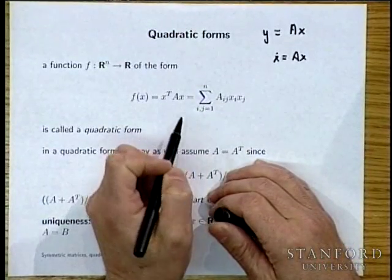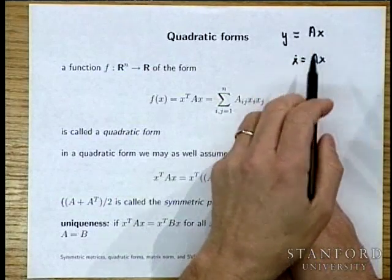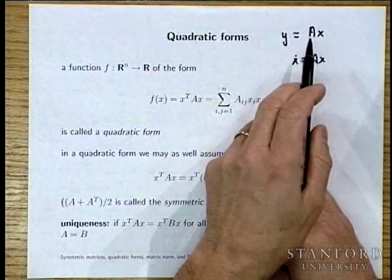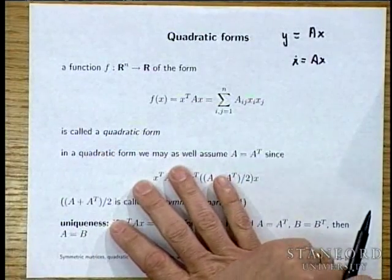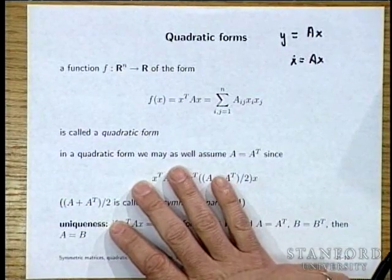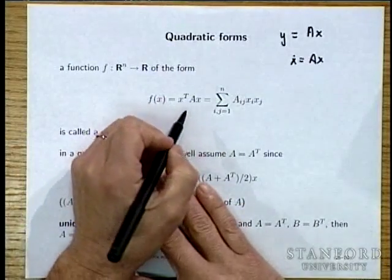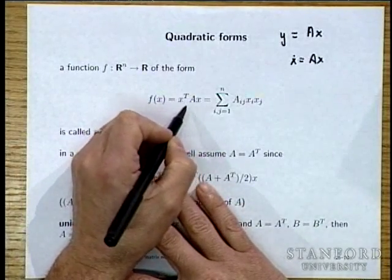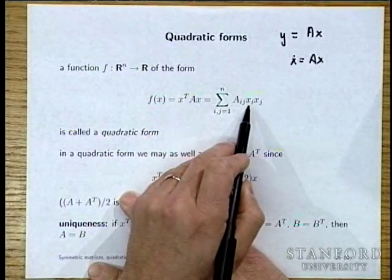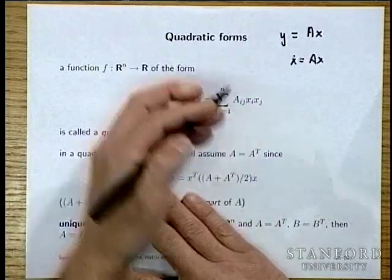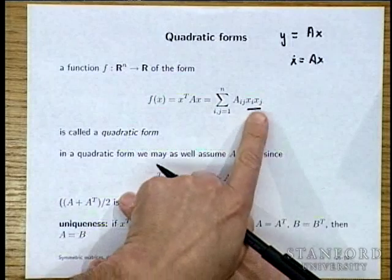We're now going to use the same data structure — a matrix — to represent something completely different from a transformation or linear function. It's a quadratic form. A quadratic form is something that generalizes the idea of the square of something, and it has the form X transpose AX, which equals the sum of A_ij * X_i * X_j over all pairs.